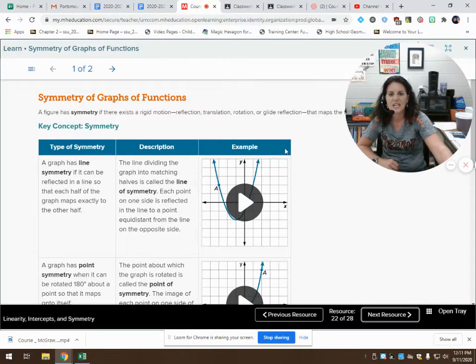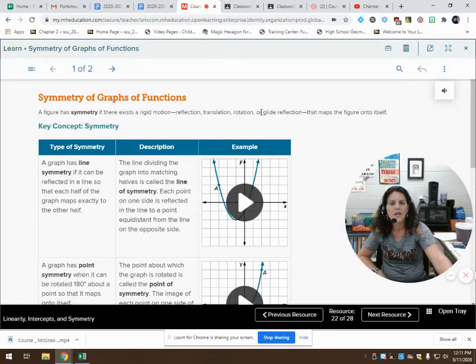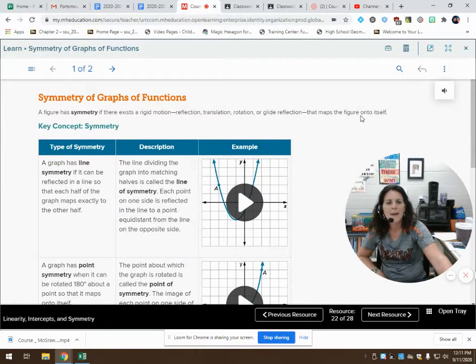And then it says or glide reflection. A glide reflection. I should just not guess what it's saying. I should actually read it, huh? Or glide reflection that maps the figure onto itself.